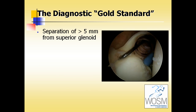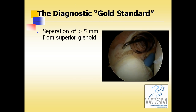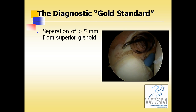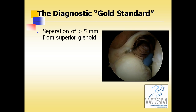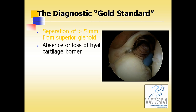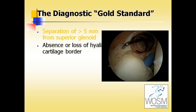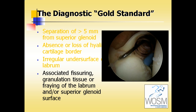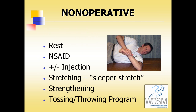The diagnostic gold standard is arthroscopy. Here we see separation of more than five millimeters from the superior glenoid. Other arthroscopic findings include the absence or loss of the hyaline articular cartilage border, irregularity of the undersurface of the labrum as seen here, and associated fissuring, granulation tissue, or fraying of the labrum and/or the superior glenoid surface.